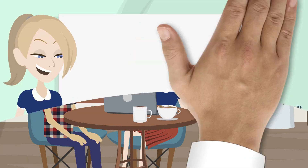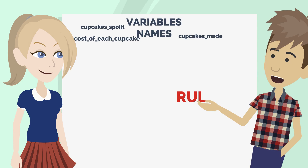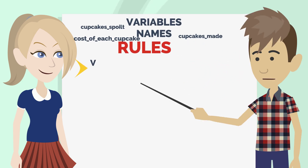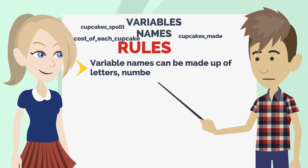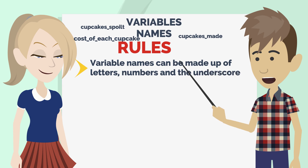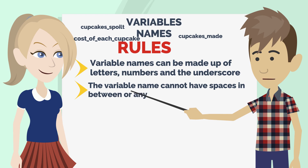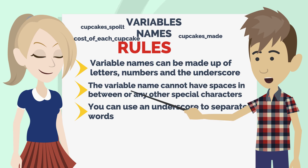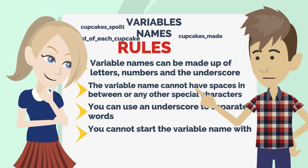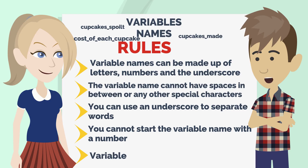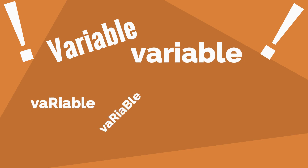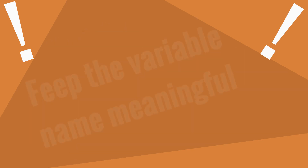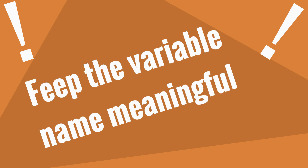That's a good observation. When it comes to naming variables in Python, there are certain rules you need to follow. Variable names can be made up of letters, numbers, and the underscore character. The variable name cannot have spaces or any other special characters, but you can use an underscore to separate words. Also, you cannot start the variable name with a number. Variable names are case sensitive, so be careful about which letters are in capitals. It's always a good idea to keep the variable name meaningful.